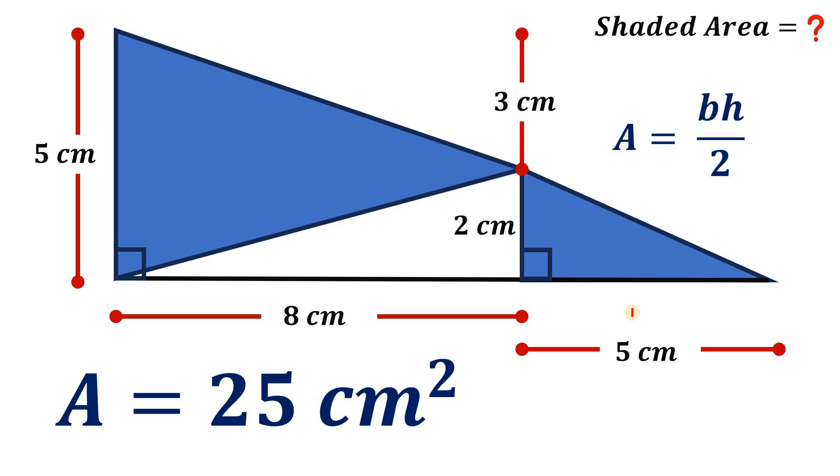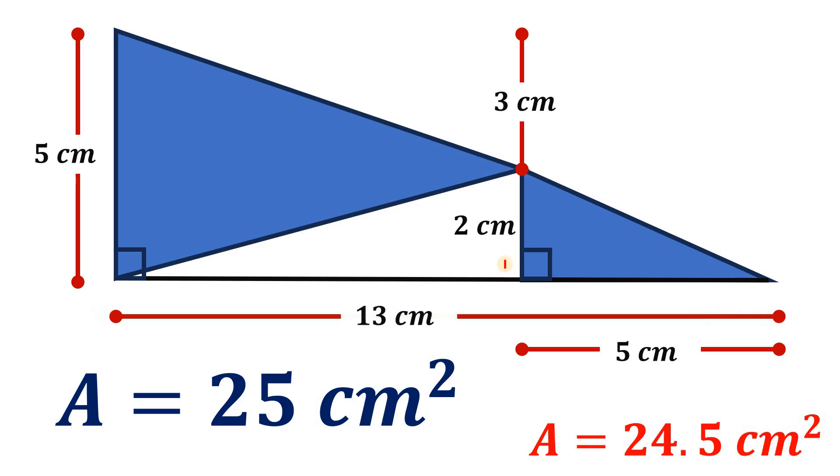Now the question is, of course, why not? Why 24.5 square centimeters is not the correct answer. So this is not the area of the whole triangle minus the area of this white triangle. Now I will show you why. Now here's the figure.